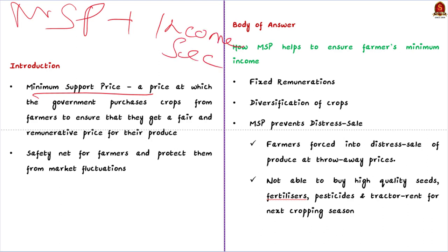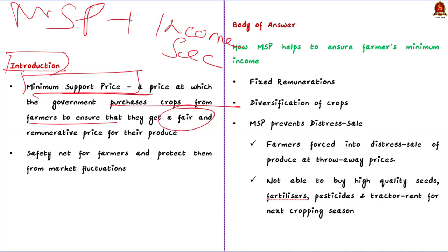We shall begin the answer with a brief definition of MSP. Minimum Support Price is a price at which the government purchases the crop from the farmers to ensure they get a fair and remunerative price for their produce. The MSP is set by the government to provide a safety net for farmers and protect them from market fluctuations, ensuring a minimum level of income for their agricultural produce.